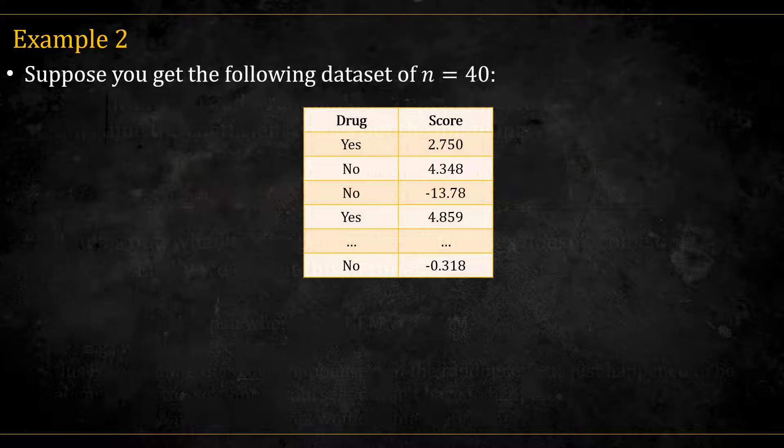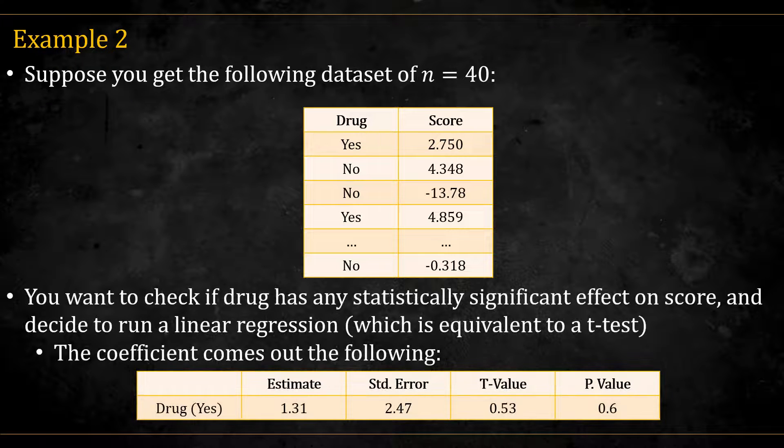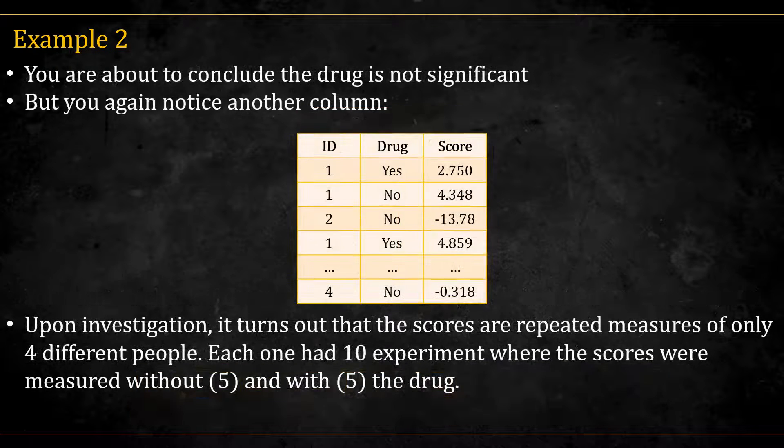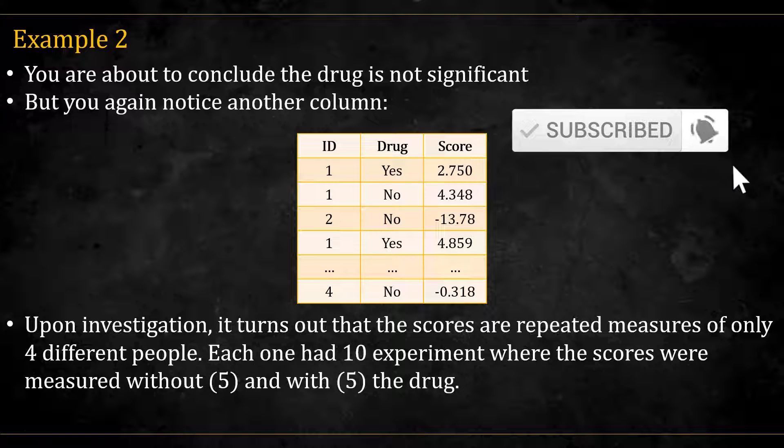Let's move to the second example. You have the following dataset: 40 observations. X is use of some drug, and Y is some score. You run a linear regression to check if drug has any effect on the score, and it comes out with an insignificant p-value. You are about to conclude that the drug has no effect, but again you notice the ID column. And upon investigation, it turns out that these are repeated measures of four different people. Each one had 10 experiments, five measured without the drug, and five with the drug.